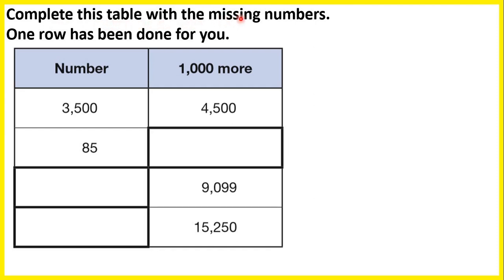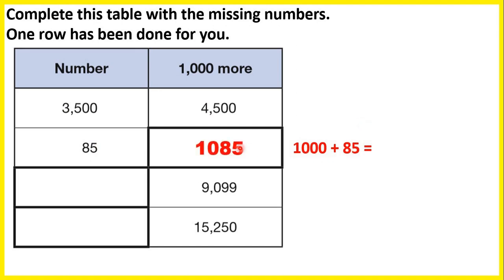Complete this table with the missing numbers. One row has been done for you. So if we have the number 3,500, then 1,000 more will be 4,500. Now we need to find the number that's 1,000 more than 85. So if we work out 1,000 plus 85, that gives us 1,085 — so 1 as the thousands digit, 8 as the tens, and 5 as the ones.